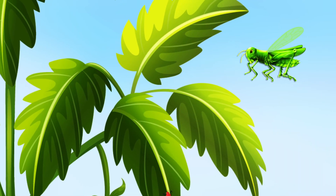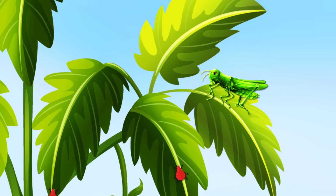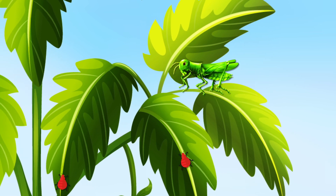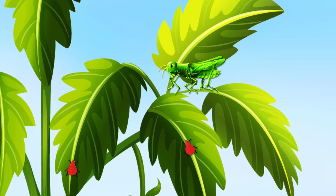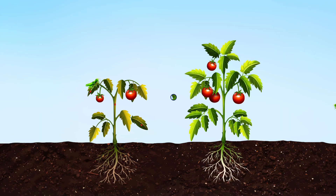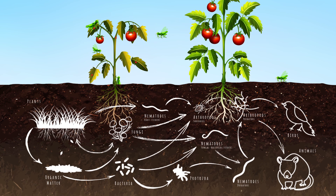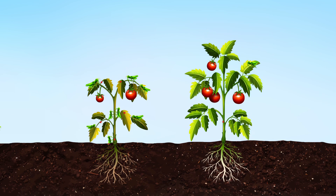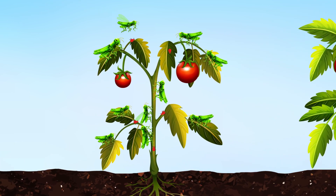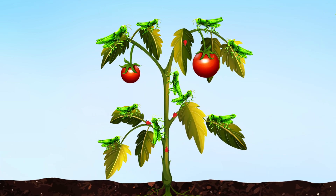Insect pests can also be a problem for farmers. These are much larger than the disease-causing microorganisms we just looked at. But real-world trials have shown that with a balanced soil food web in place, insect pests are deterred from attacking the healthy plants that are grown. Healthy plants produce chemicals that deter pests, whilst plants that are stressed are less able to do this, and so they're more susceptible to attack.